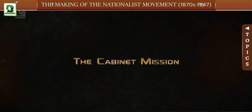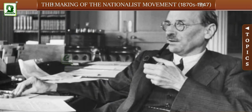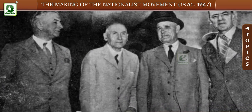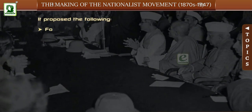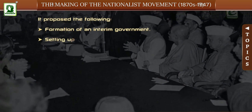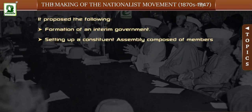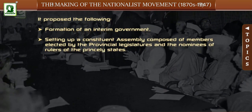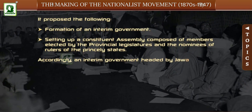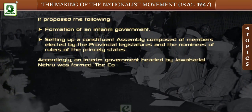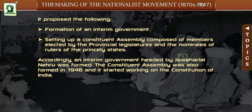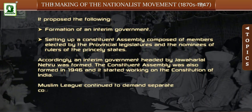The Cabinet Mission: In 1946, Clement Attlee, the Prime Minister of Britain, sent a Cabinet Mission to India to negotiate the transfer of power. It proposed the formation of an Interim Government and setting up a Constituent Assembly composed of members elected by the provincial legislatures and nominees of rulers of the princely states. Accordingly, an Interim Government headed by Jawaharlal Nehru was formed. The Constituent Assembly was also formed in 1946 and had started working on the Constitution of India. The Muslim League continued to demand a separate country for Muslims.